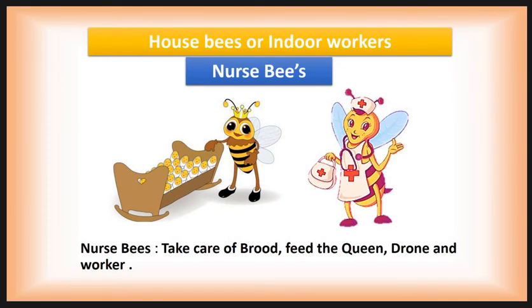The second indoor worker bee is the nurse bee. Nurse bees take care of the brood and feed the queen, drone, and workers. Nurse bees have a specialized gland called the hypopharyngeal gland which secretes royal jelly. Nurse bees feed royal jelly to the queen and to one to three day old larvae, and also feed bee bread to the drones. They take care of the brood, and three to eleven day old worker bees perform these jobs.